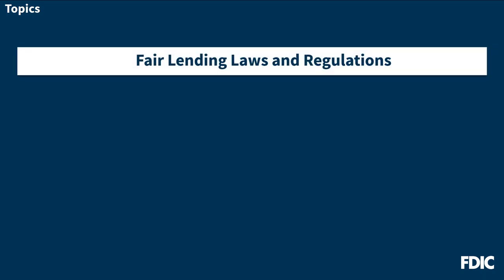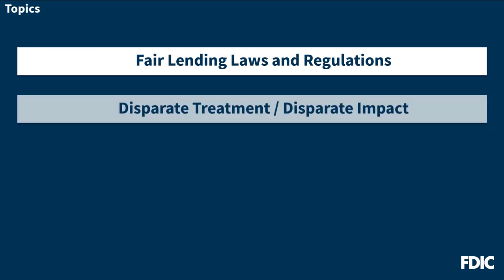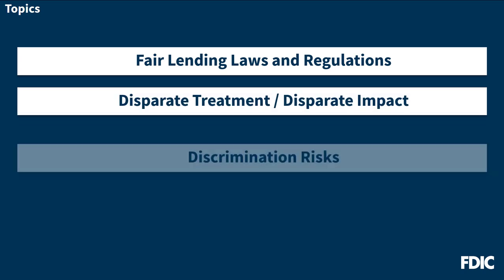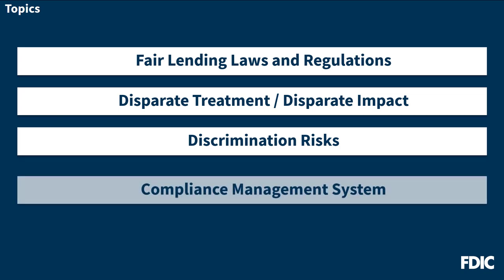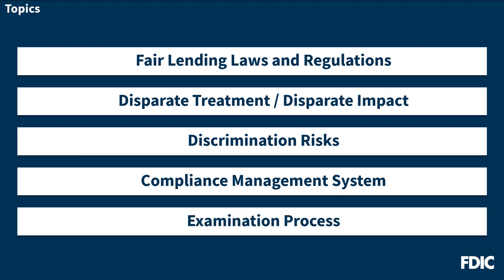In this video, we'll discuss the federal fair lending laws and regulations, the concepts of disparate treatment and disparate impact, and we'll identify discrimination risk along with providing specific examples. We'll also highlight elements of the bank's compliance management system that can help address these risks, and provide insight as to how the FDIC assesses fair lending during a consumer compliance examination.